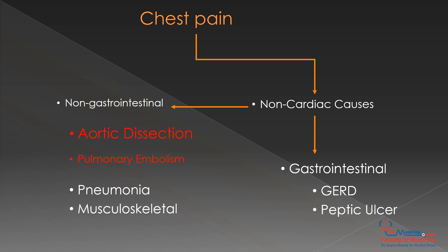Of these causes, the fatal ones are aortic dissection and pulmonary embolism. So to conclude, there are three causes of acute fatal chest pain: myocardial infarction, aortic dissection, and pulmonary embolism.